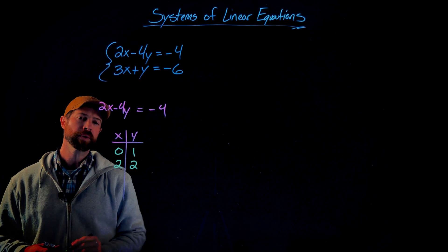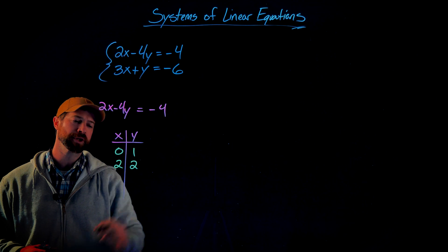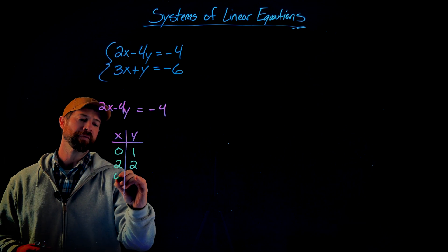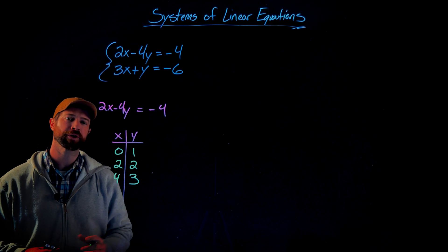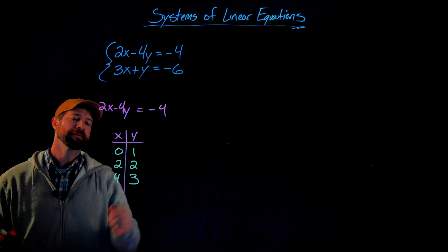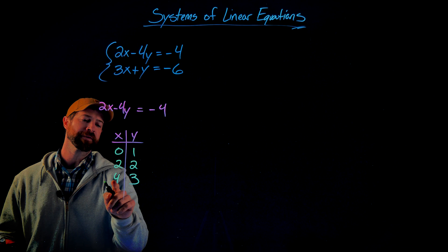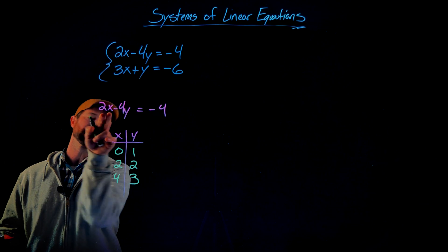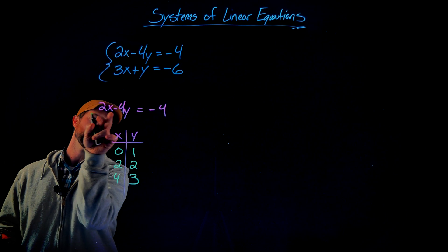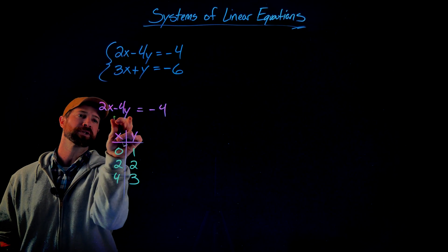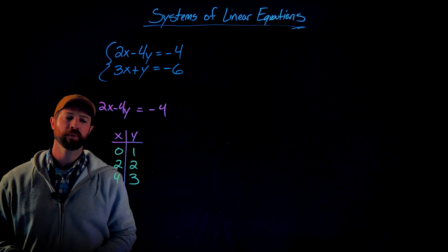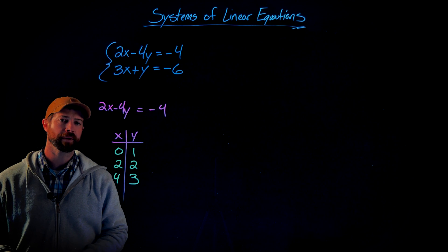(2, 2) is a solution, and (4, 3) is a third solution. For instance, if I plug in 4 for x, I get 8 minus 12. 8 minus 12 is equal to negative 4.